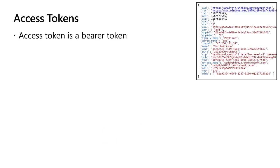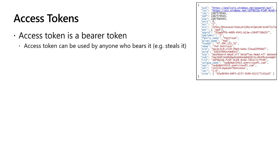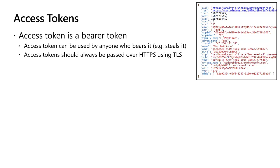An access token is a bearer token. It's just a bunch of JSON moving across the network, but being a bearer token means anyone who bears it can use it. If a bad actor gets hold of it, it's more like cash than an ATM card requiring a PIN. Because access tokens are bearer tokens, they must always be encrypted when passed across the network — they should always be passed over HTTPS using transport layer security.